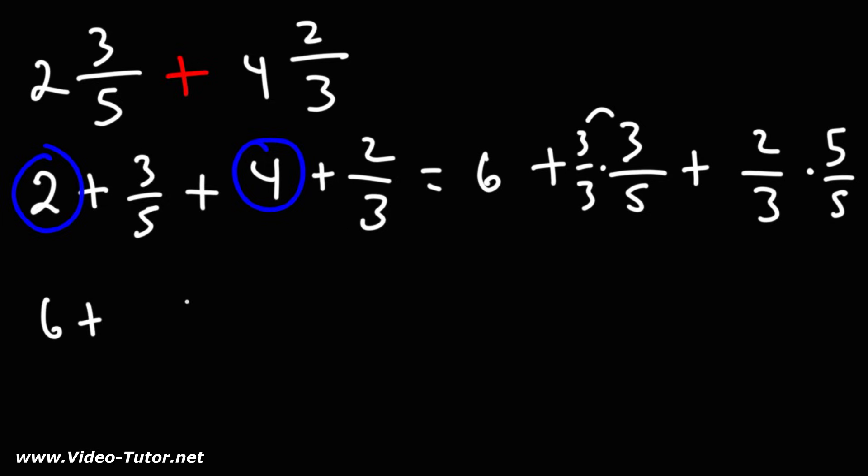So now we can multiply across. 3 times 3 is 9, 3 times 5 is 15. And 2 times 5 is 10, 5 times 3 is 15.